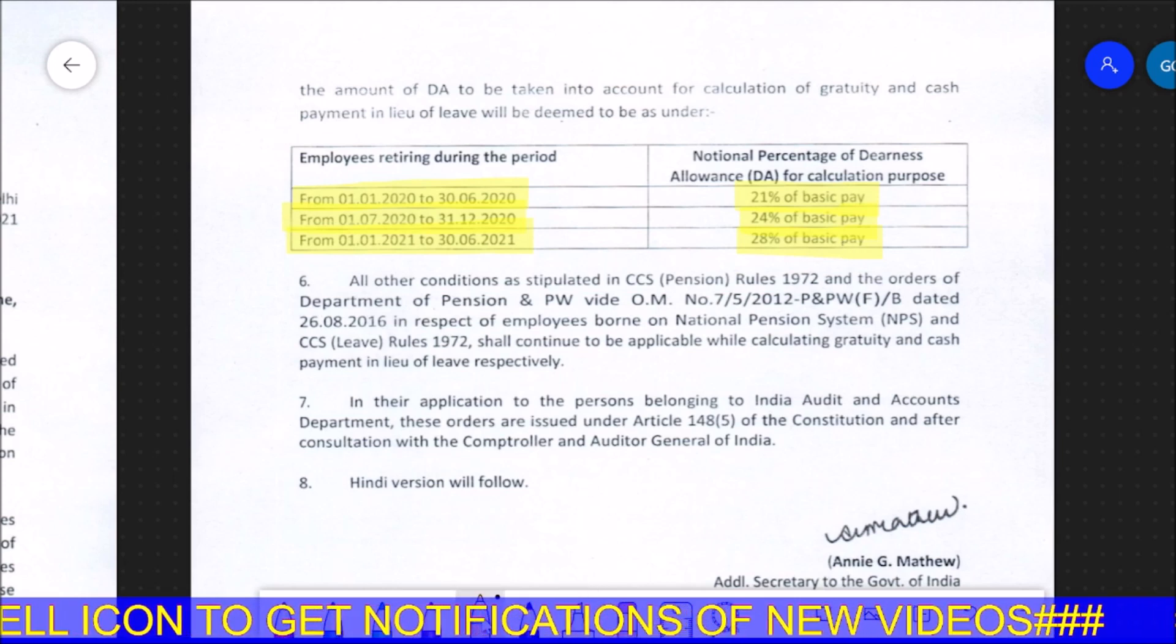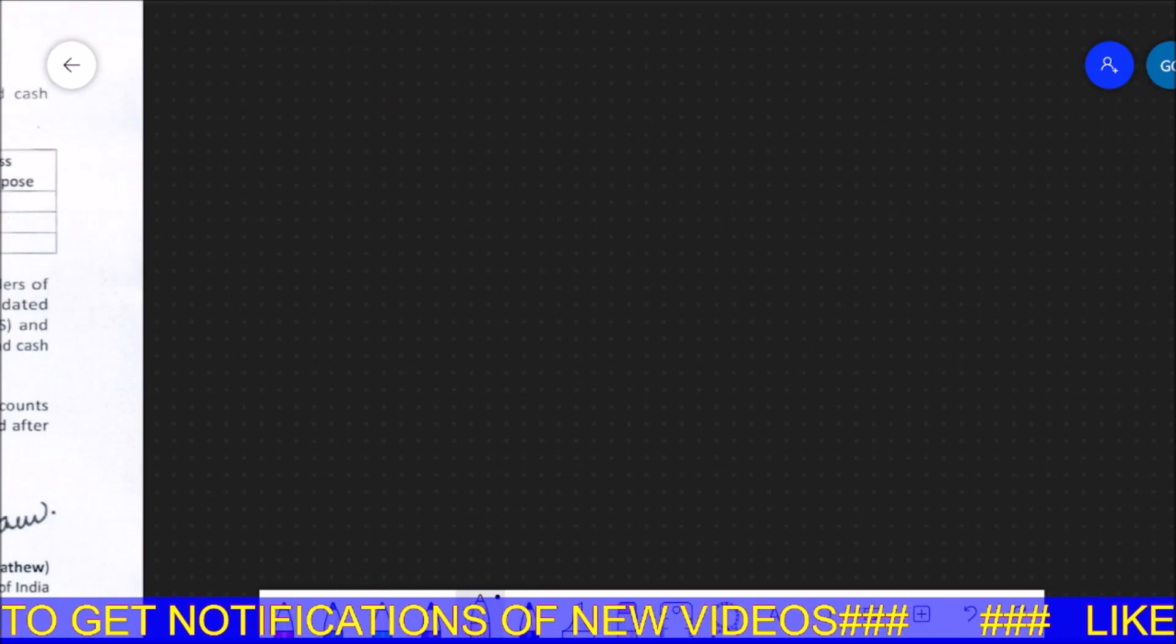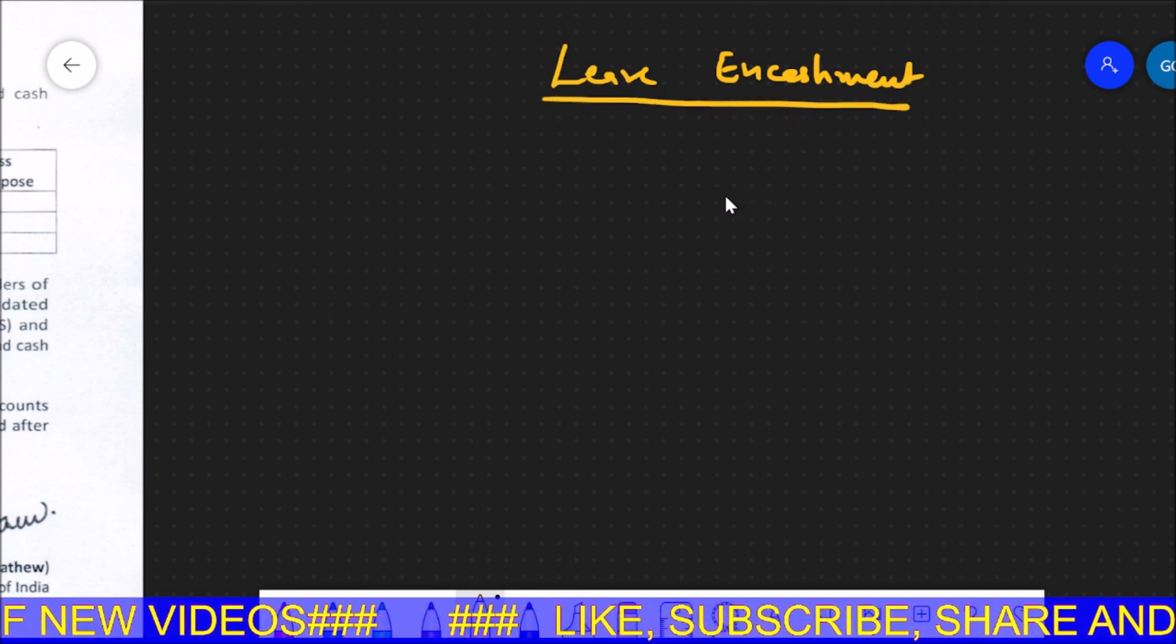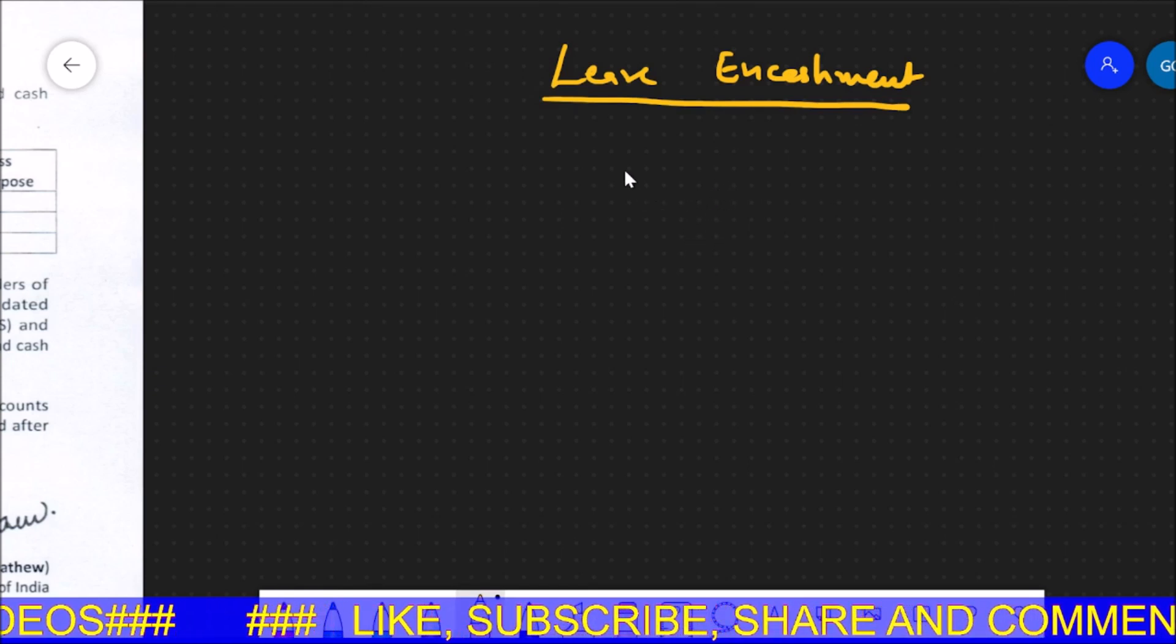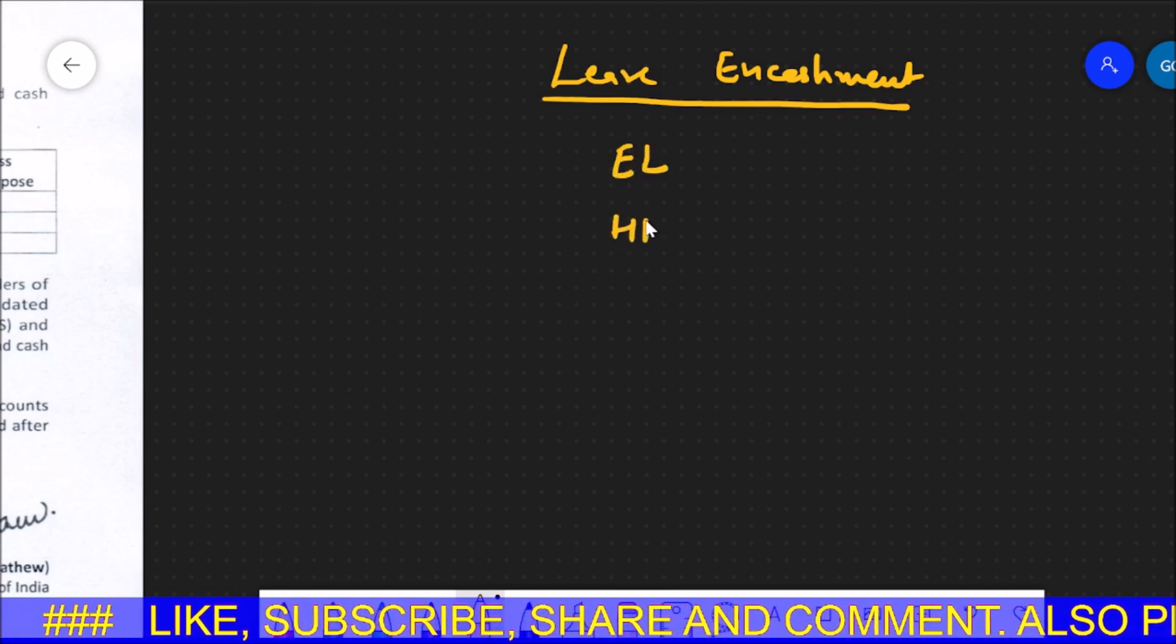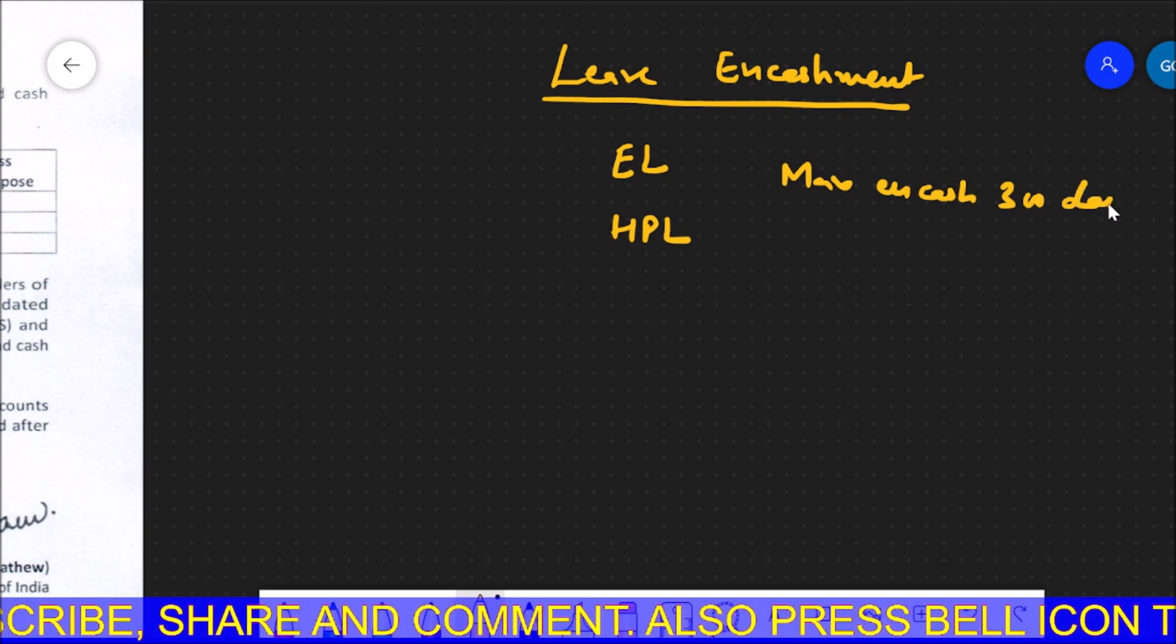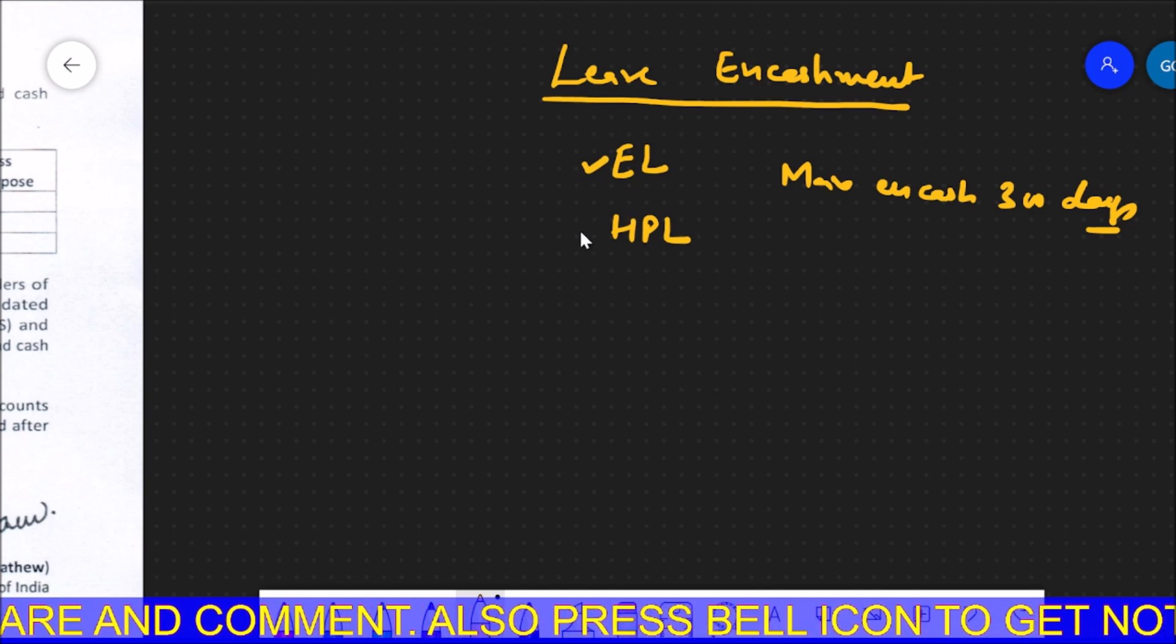Now the question is, how does the calculation happen? So let's talk about two calculations. The first calculation is leave encashment. Whether I retire on superannuation or retire at 60 years, I will do the calculation. In that, what happens is EL or HPL encashment. Maximum encashment is 300 days, and there is the calculation of EL first and then HPL.